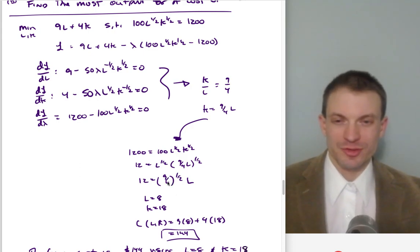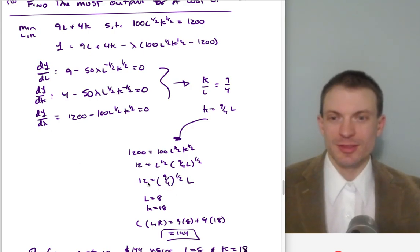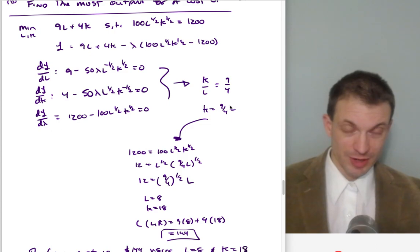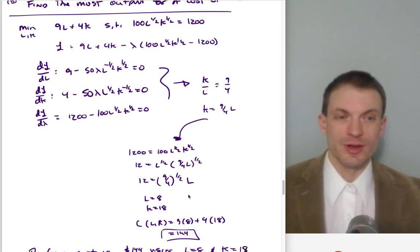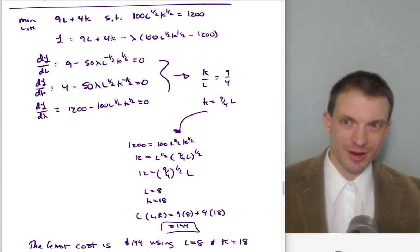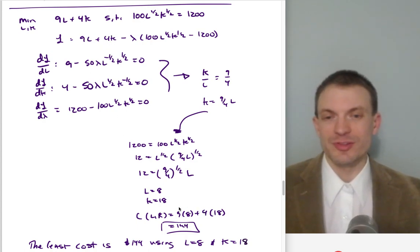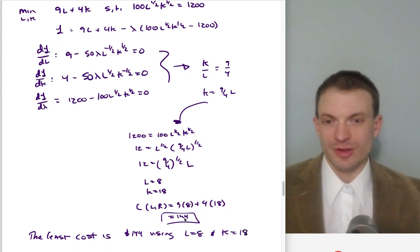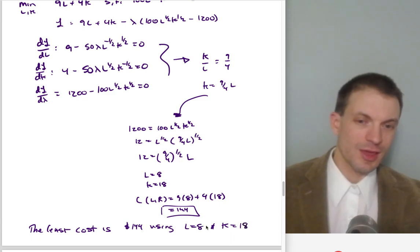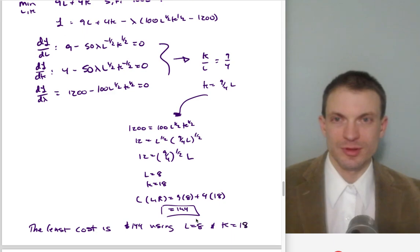Multiplying through and solving, we get L = 8. Substituting 8 back in gives K = 18. Plugging these into the cost function — evaluating the objective at the optimals — we get a minimum cost of $144. So the cheapest way to produce 1,200 units is to use 8 units of labor and 18 units of capital at a cost of $144.